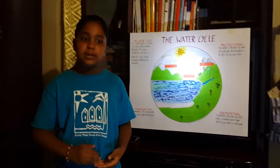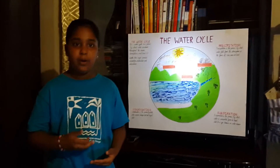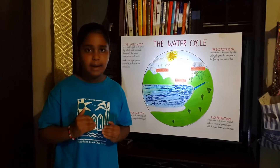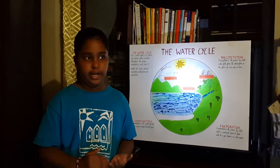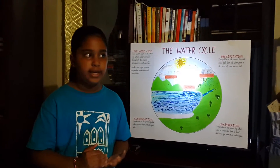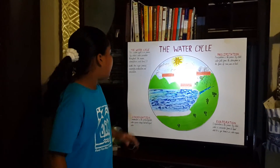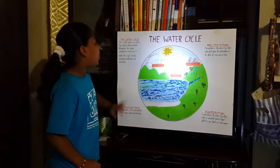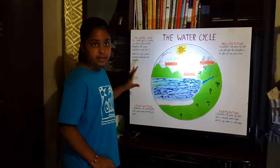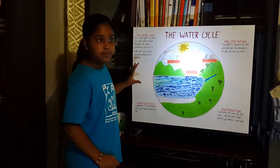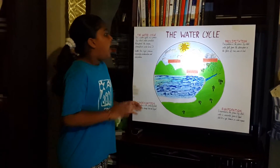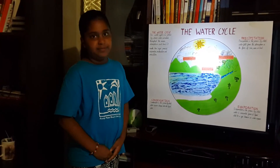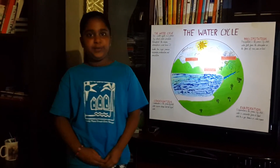Precipitation is the process by which water falls from the atmosphere in the form of rain, snow or hail. These three processes complete the water cycle. The water cycle is always happening. Thank you.